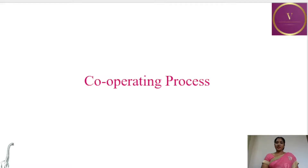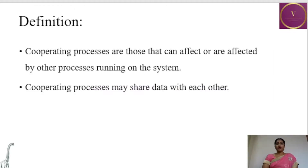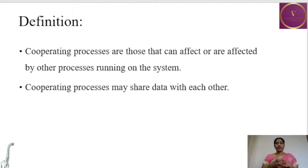Cooperating processes. Processes are basically of two types: independent process and cooperative process. Processes which are not affected by or which will not affect other processes are called independent processes. Whereas processes which can affect other processes are called cooperative processes. The result of one process will be the input of another process, so they are interdependent on each other. That is why we call them cooperative processes.